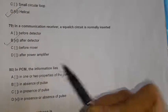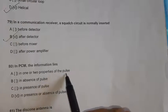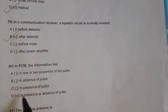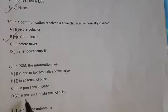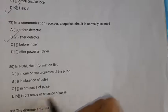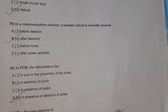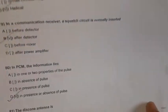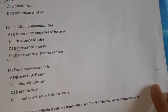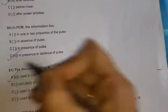Question 80: In PCM, the information lies in the presence or absence of pulse. Option D is the right option. Question 81: The discone antenna is used in the UHF range — ultra high frequency range.